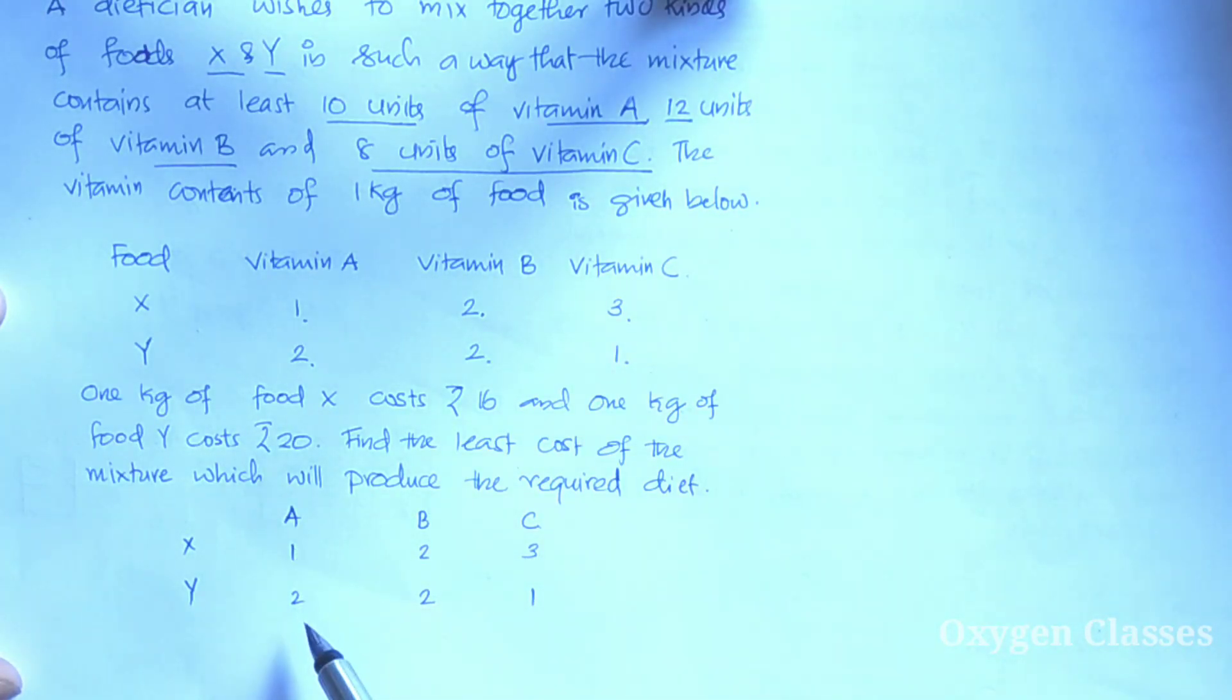X and Y is a mix of diet. We need at least 10 units of vitamin A, so greater than or equal to 10 units, at least 12 units of vitamin B, greater than or equal to 12, and at least 8 units of vitamin C, greater than or equal to 8.